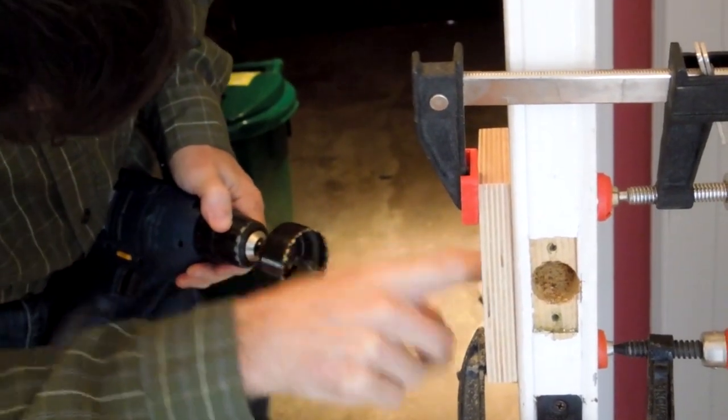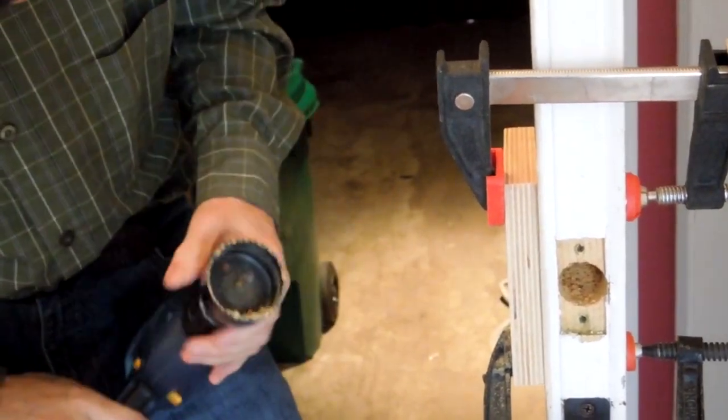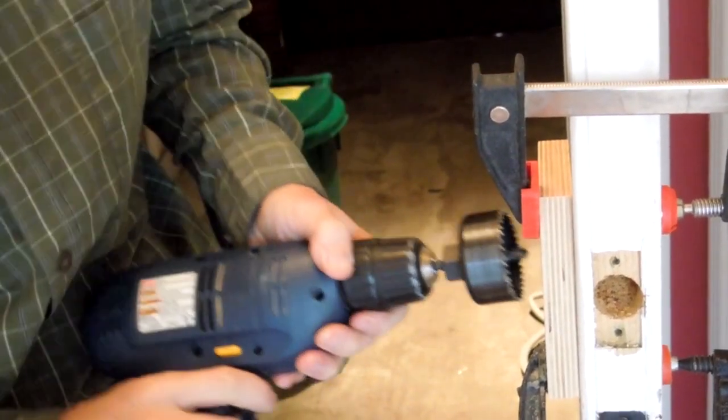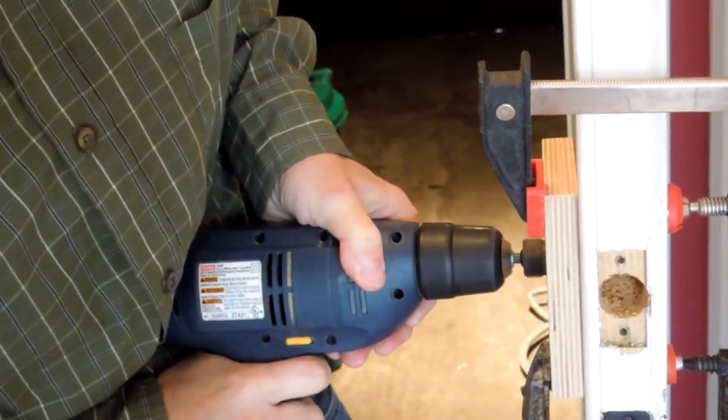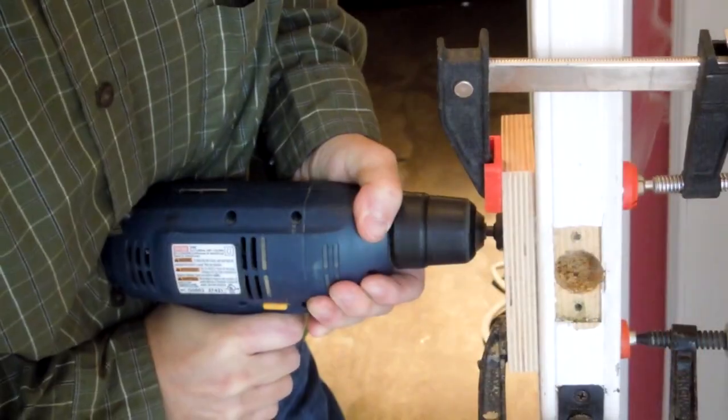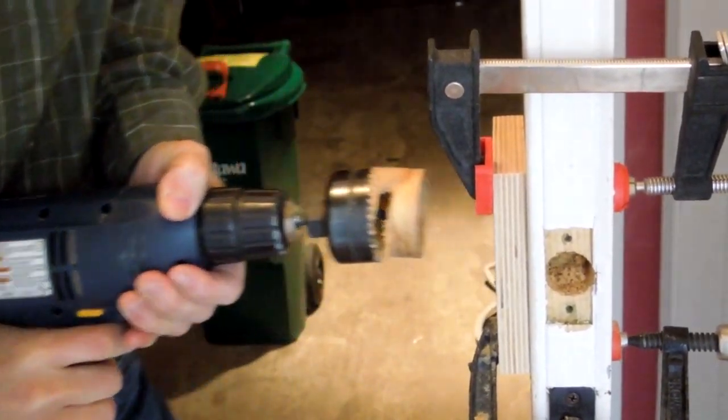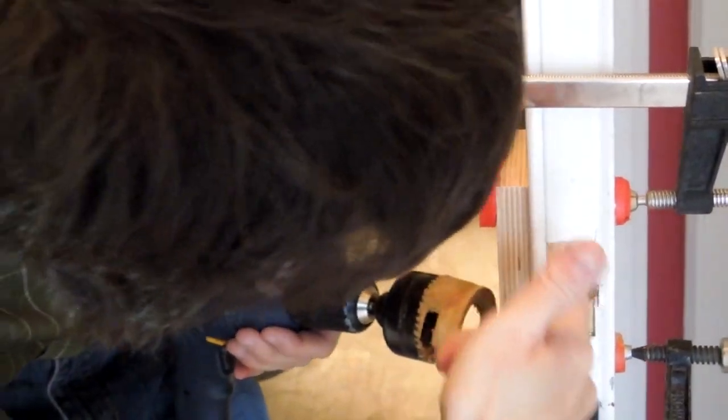I always have to back out a couple times to allow it to clear the chips because these hole saws are terrible at clearing chips. As soon as they get deep enough to hit that hole, the chips can clear and it cuts much quicker.